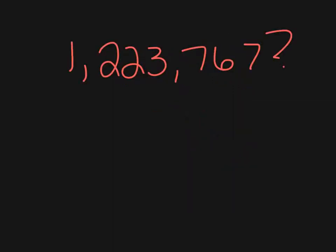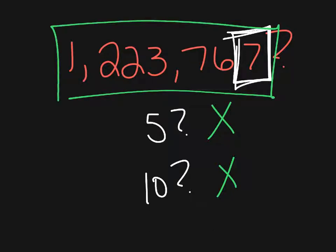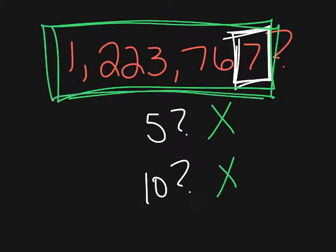Let's take a look at one more example: 1,223,767. We want to look at the number in the ones place, and that is a 7. Thinking about our divisibility rules for 5 and 10 — does this number end in a 0 or 5? That's the rule for 5. The answer is no. And does the number end in a 0? That's the rule for 10. The answer is no. So this number would not be divisible by 5 or 10.